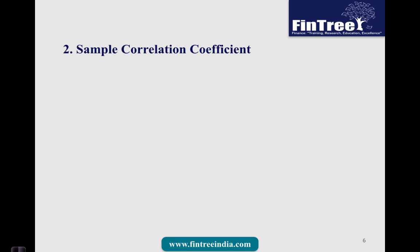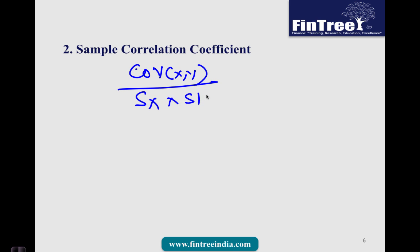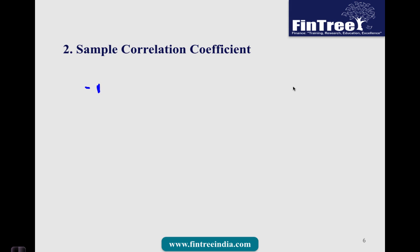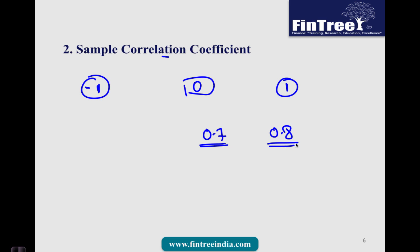The next formula is the sample correlation coefficient. The formula is the covariance between x and y divided by the sample standard deviation of x multiplied by the sample standard deviation of y. Since covariance carries percentage-squared units and standard deviations carry percentage units, correlation ends up with no unit. Correlation is bounded by minus 1 and plus 1: plus 1 is a perfect positive linear relationship, minus 1 is a perfect negative linear relationship, and 0 means no linear relationship. A benefit of correlation is that you can directly compare values — a correlation of 0.8 shows a stronger linear relationship than 0.7.